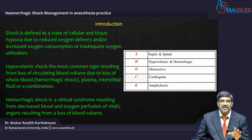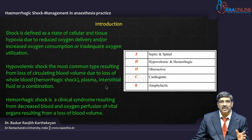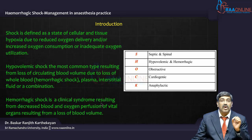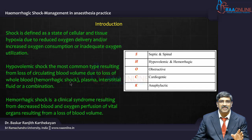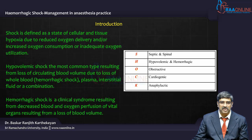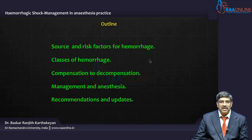What is hypovolemic shock? Here, there is intravascular fluid loss — it might be plasma, interstitial fluid, or a combination. But what is hemorrhagic shock? Here, only blood is lost — the intravascular blood volume is lost. So hemorrhagic shock is a form of hypovolemic shock. In the next 30 minutes, I will be talking about the sources and risk factors of hemorrhage in the perioperative period.